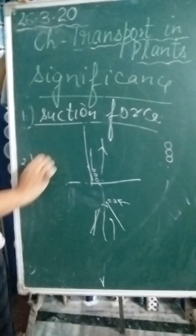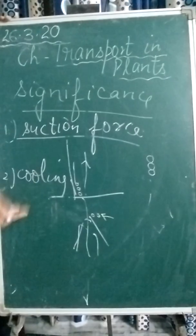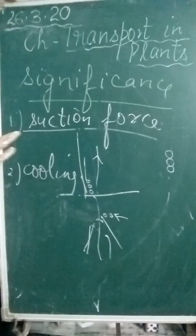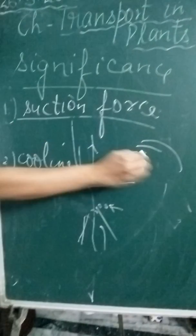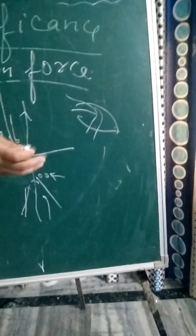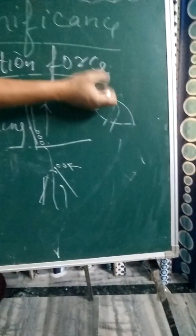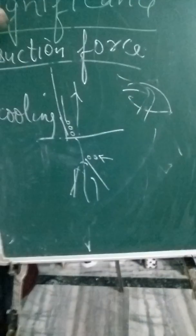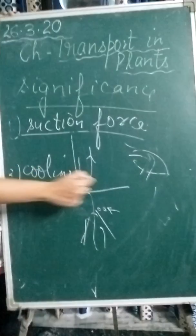Number two: transpiration gives a cooling effect to the leaves of the plant. It is only because of transpiration that trees and plants remain cool. On a hot summer day, the upper layer of the leaves remains very active and fresh because of transpiration. When the temperature of the leaves rises, the water moving out through the stomata absorbs the latent heat of the leaf and comes out, providing a cooling effect. So transpiration plays a very significant role: number one, roots absorb water and minerals from the soil; number two, it provides a cooling effect to the leaves.